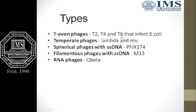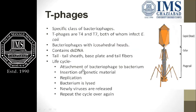T-even phages use even numbers — T2, T4, T6 — and they mostly infect E. coli. Temperate phages include lambda and mu. Spherical phages include phi X174. Filamentous phages include M13, and RNA phages include Q-beta.